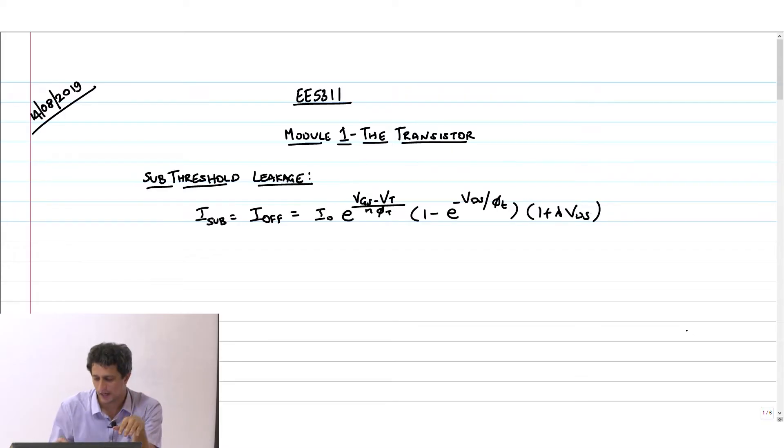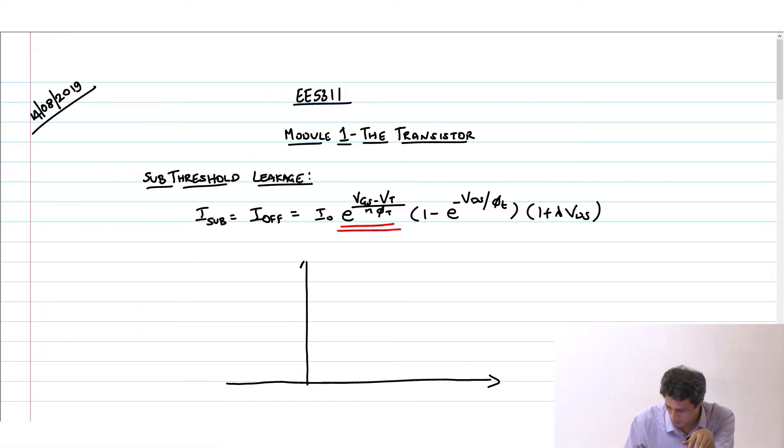The most important part is this exponential dependence on V_gs and V_t. As a designer, if you look at the plot of log I_d versus V_gs, it will look something like this. If you keep reducing V_gs further, it will keep coming down.